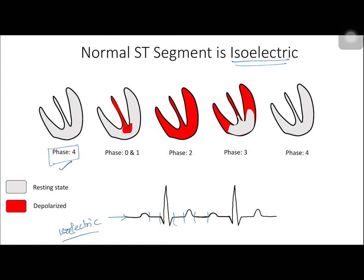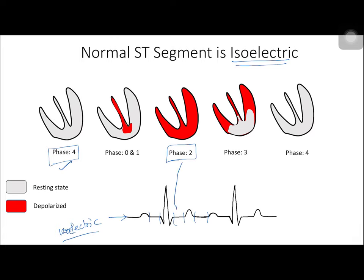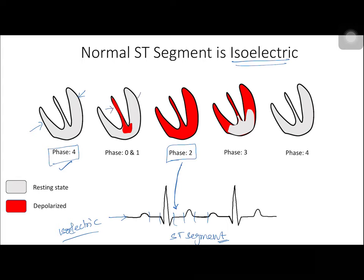The isoelectric segment occurs when the heart is either completely at resting membrane potential, as in phase four of the ventricular action potential, or in phase two where the membrane is completely depolarized — the entire ventricular myocardium is completely depolarized. Phase two of the ventricular action potential corresponds to the ST segment, making it responsible for this isoelectric region. When all cells are electrically the same, there is no potential difference across the myocardium.